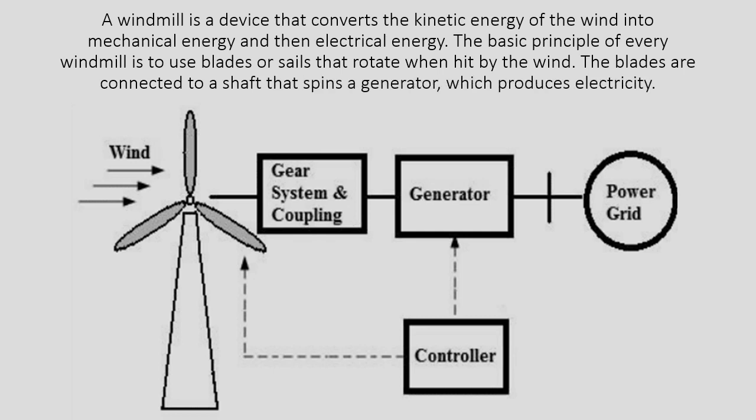The blades are connected to a shaft that spins a generator, which produces electricity. There are different types of windmills based on their axis of rotation.